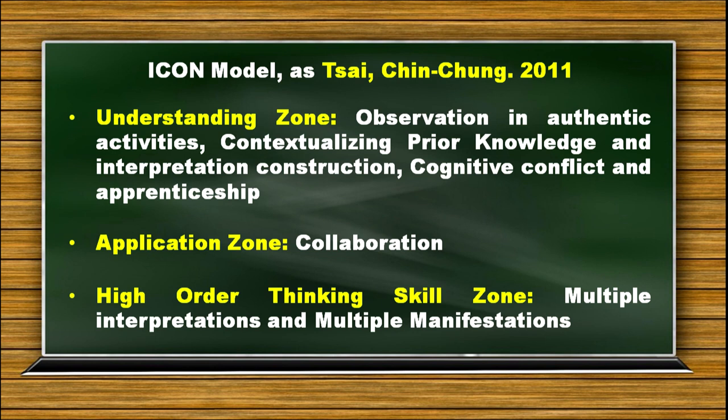The ICON model was developed by Tsai Chinsang in 2011. He categorized the eight principles into three zones. In the understanding zone: observation of authentic activities, contextualizing prior knowledge and interpretation construction, and cognitive conflict and apprenticeship. Collaboration principles come under the application zone. Multiple interpretation and multiple manifestation come under the higher-order thinking skill zone.